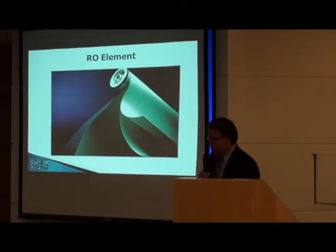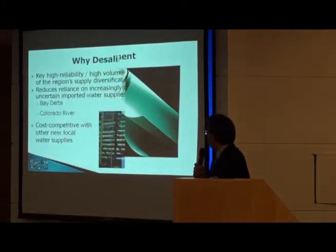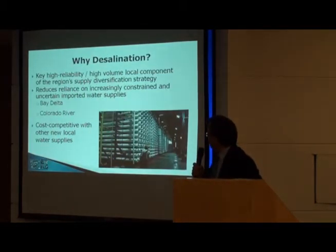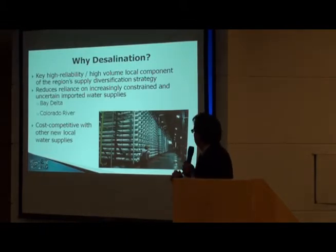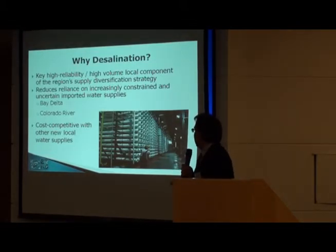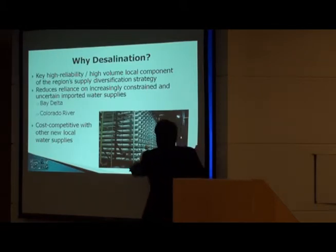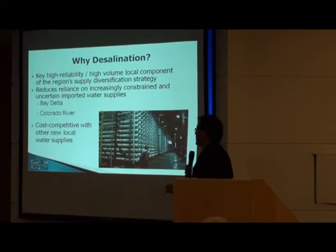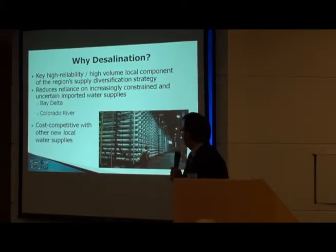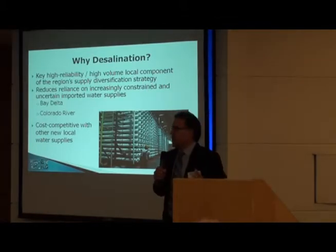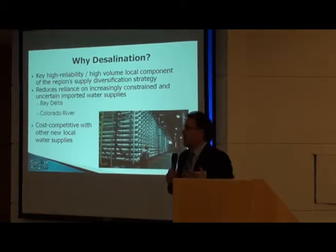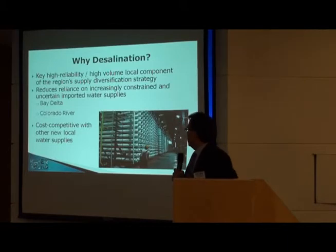This next picture shows what a modern desalination plant looks like. Those membranes are housed in what are called vessels, with about seven or eight membranes laid side by side in each one. These vessels are arrayed in large racks, and that's what the plant essentially looks like — doing what we talked about earlier.